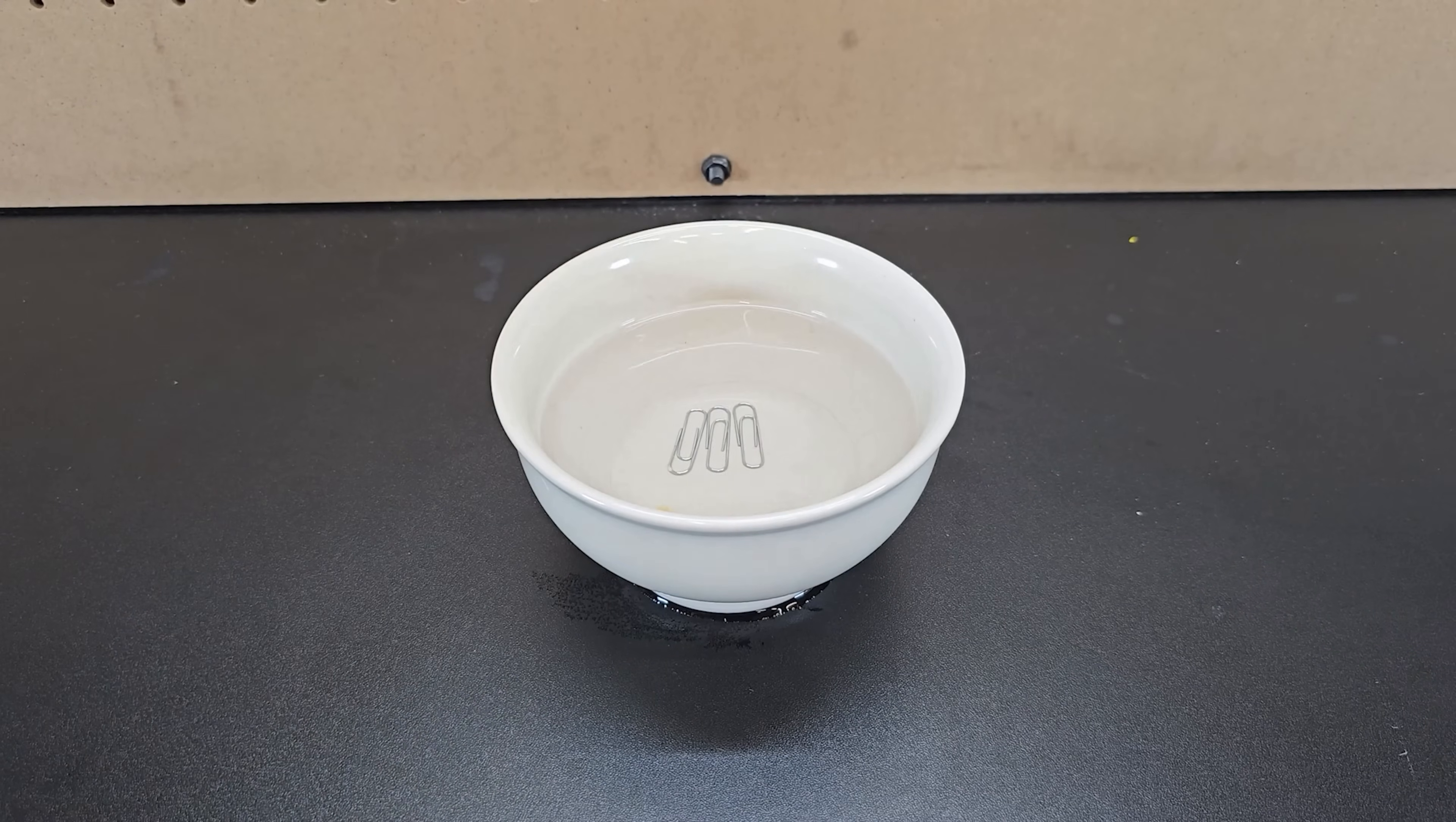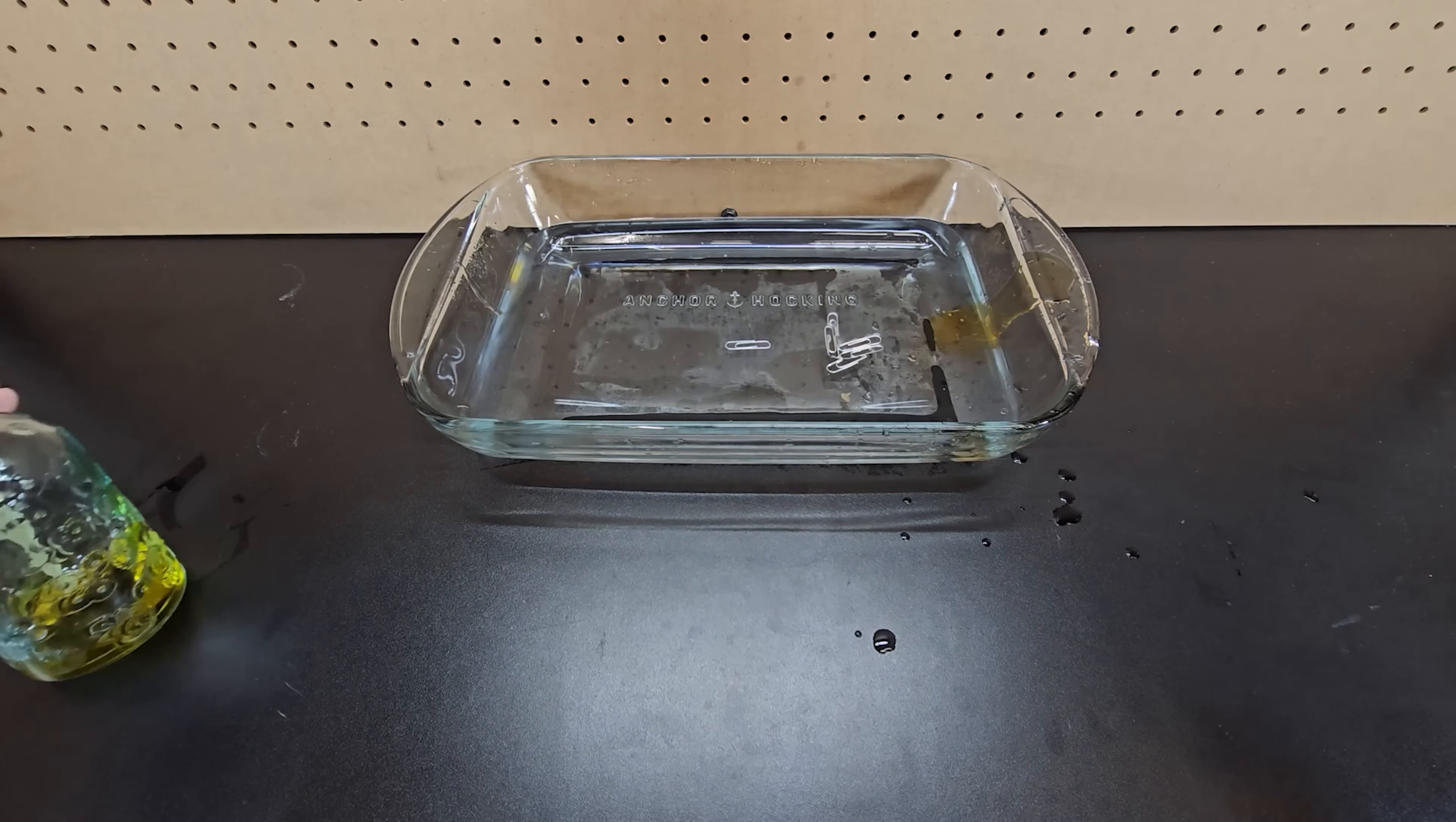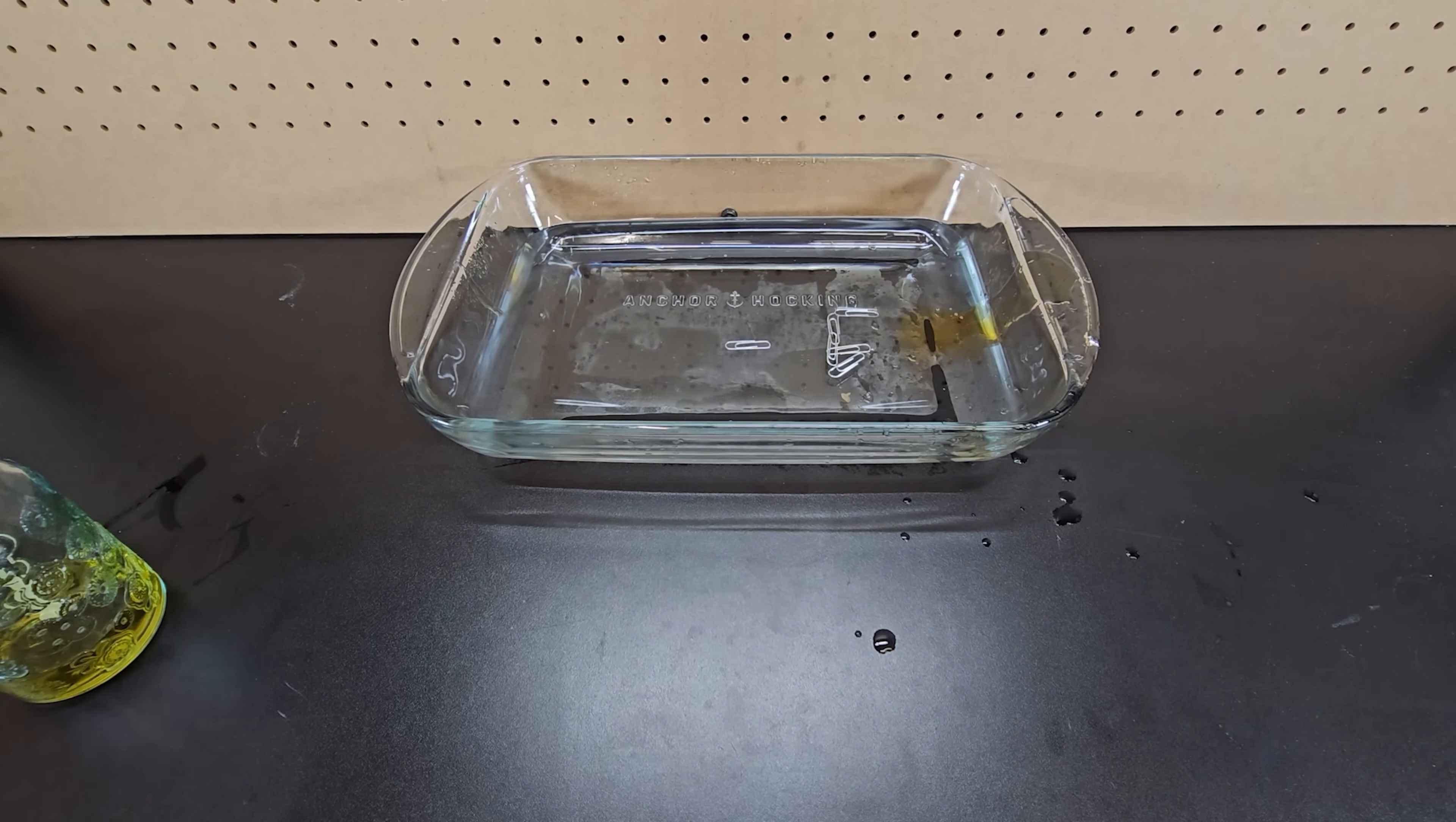It's true that adding soap to water causes floating paperclips to sink. Adding soap to the water greatly decreases the surface tension meaning it can no longer support the weight of the paperclips.